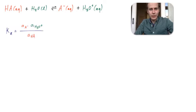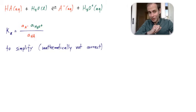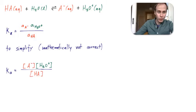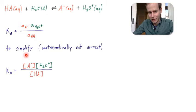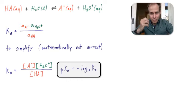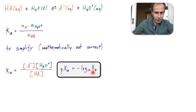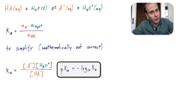Looking at the acid dissociation constant Ka, I want to briefly simplify it — and I'll show you why this may not be exactly mathematically correct. I replace the activities with the actual concentrations, so no more standard concentrations. I then define the so-called pKa value, which is the negative logarithm to the base 10 of the Ka value.